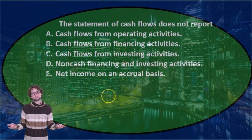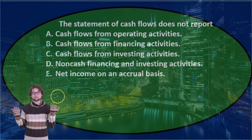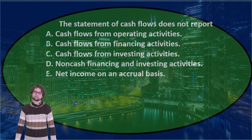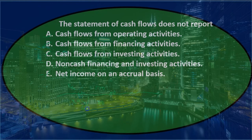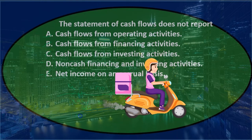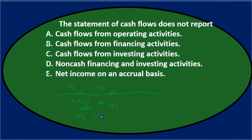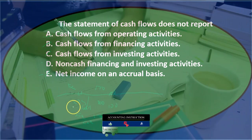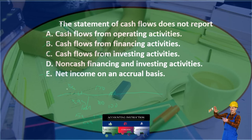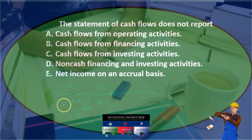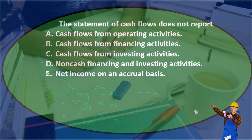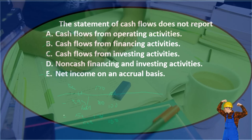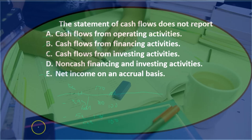You can think of that as two transactions: we took out a loan for $100 (financing activity) and then used that $100 to buy equipment (investing activity). We just cut out the cash in the middle. That's why it's a non-cash item that still gets a footnote on the cash flow statement — it represents both a financing and an investing activity that bypassed actual cash flow. So the answer is D: non-cash financing and investing activities are not reported within the main body of the statement but disclosed in notes.